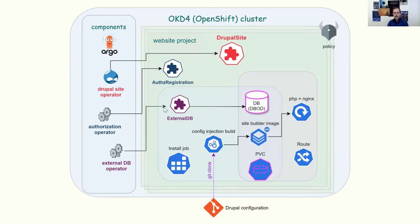You can see the site directory, the database being provisioned externally, the step where we build the image by injecting user configurations and running a source-to-image build step. Once those modules and the injected configuration are baked into the final image, it is served in production by the serving pod — the serving deployment. The site also needs to pass through an initialization phase that ensures, for example, that the SSO integration has been set up, and only after that can it be made accessible to the public through an ingress route. All of this functionality is handled by the Drupal site operator.